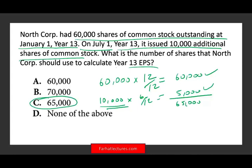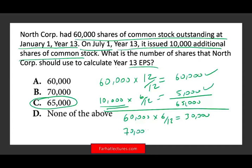So the denominator is 60,000 plus 5,000 equals 65,000 — that's method one. Method two: from January to July 1st, 60,000 shares for 6/12 equals 30,000. From July 1st to year-end, 70,000 shares (60,000 plus 10,000) for 6/12 equals 35,000. Total: 30,000 plus 35,000 equals 65,000 — same result. This is a simple example; exam questions can be much more challenging in computing the weighted average number of shares.